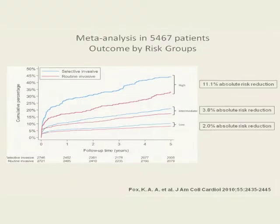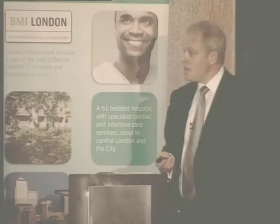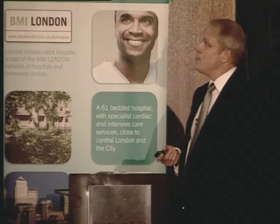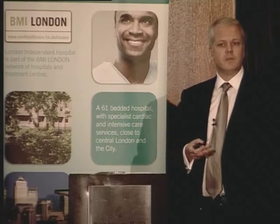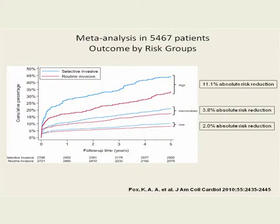A big meta-analysis published last year shows the same thing across many thousands of patients: if you have acute coronary syndrome, you need angiography and revascularization promptly, and that saves lives. The extent of lives saved depends upon the risk group. Troponin is one risk factor; there are now risk scores based on patient history, ECG, and enzymes to stratify people. In those patients at high risk, you can see a staggering 11% absolute reduction in risk. Revascularization with either PCI or bypass, according to the anatomy, is associated with saving lives.